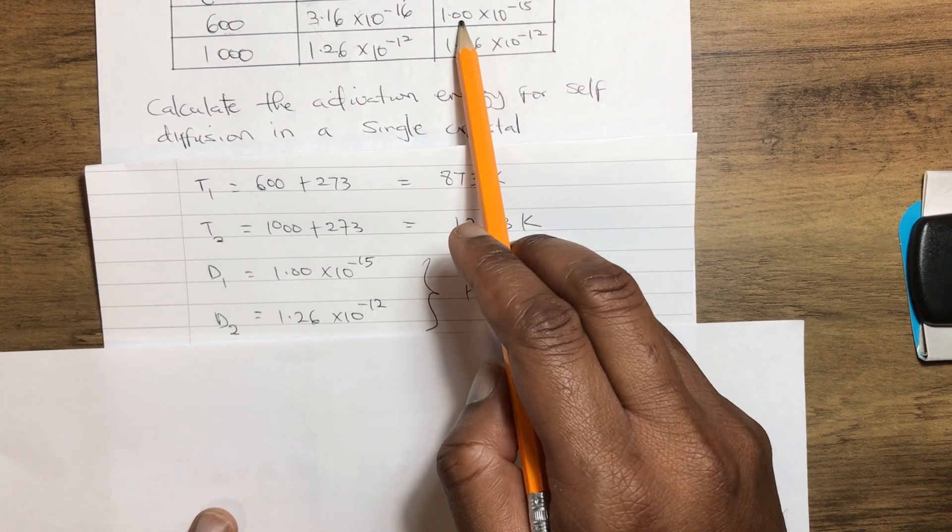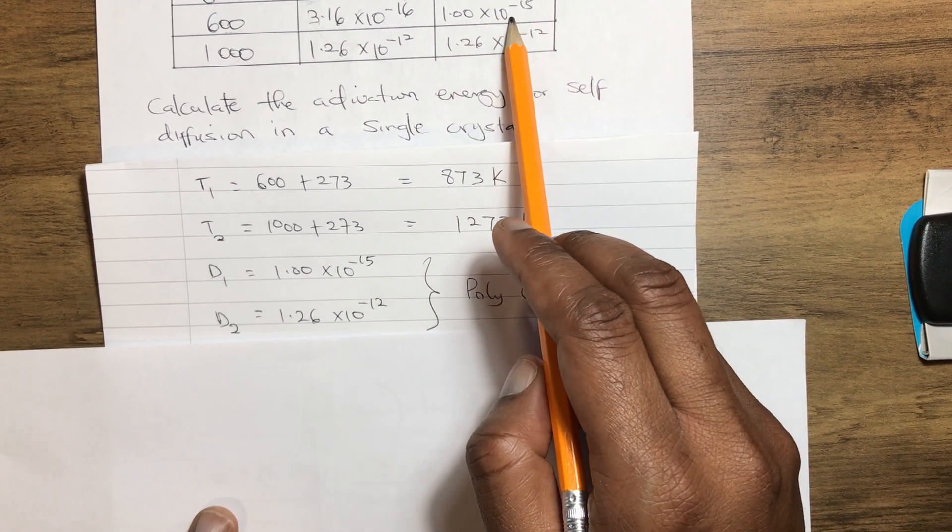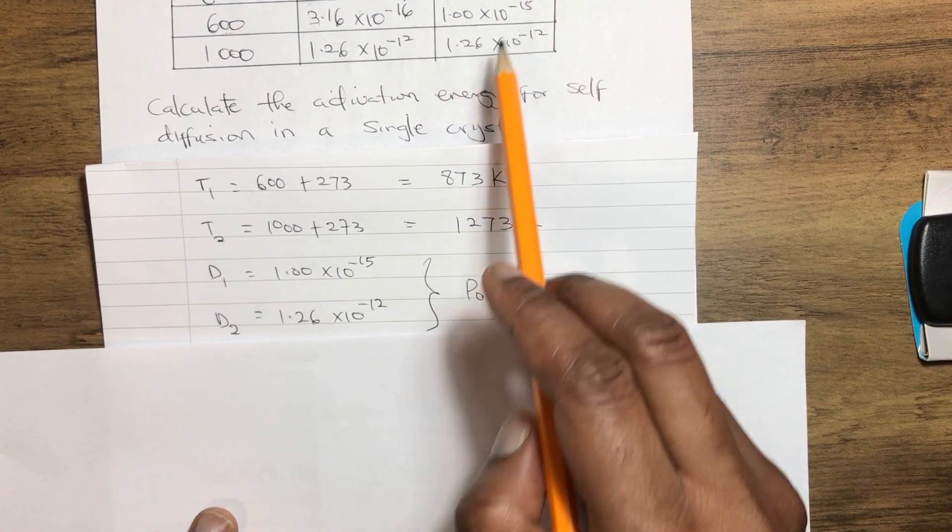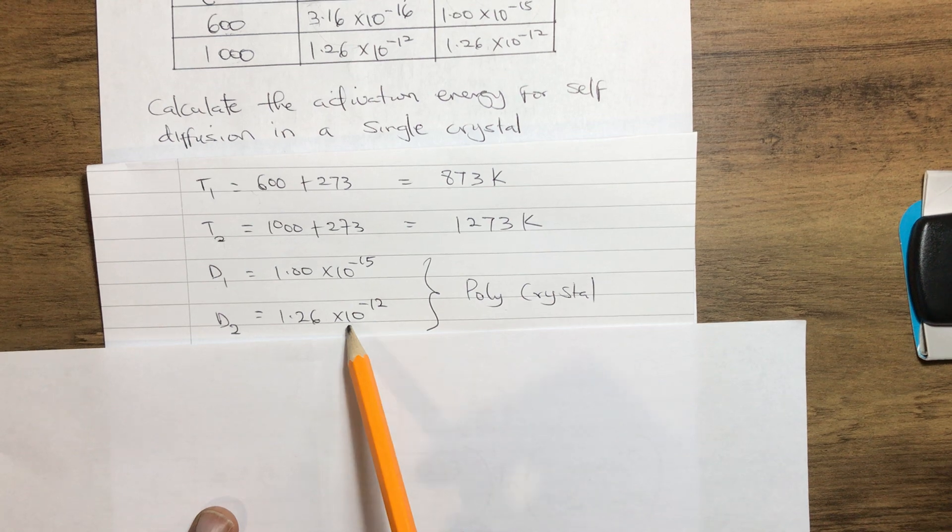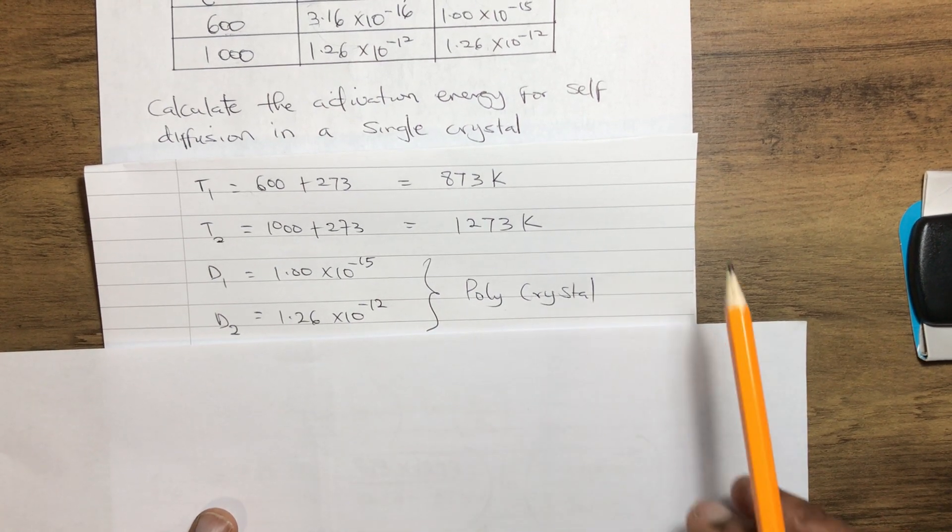Our D1 from the polycrystal is 1.0 × 10^-15. Our D2 is 1.26 × 10^-12, which is for the polycrystal.